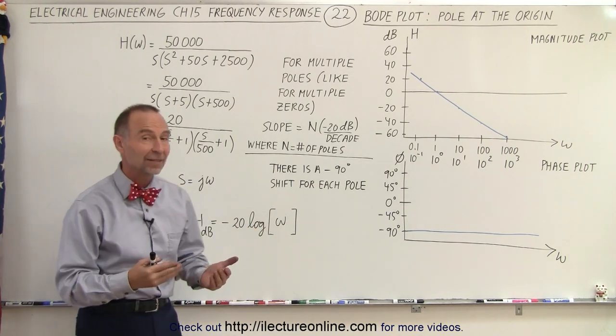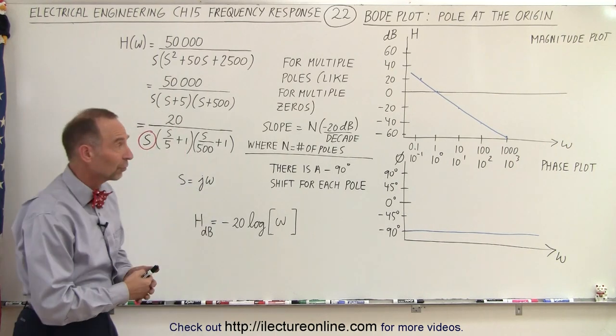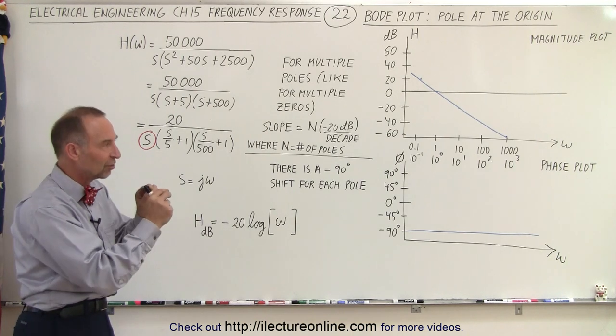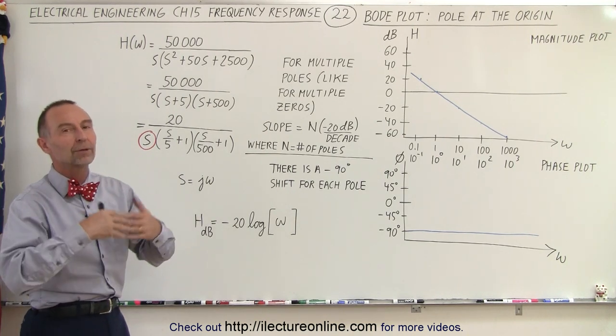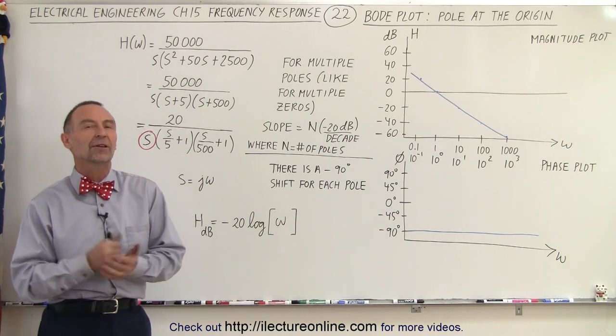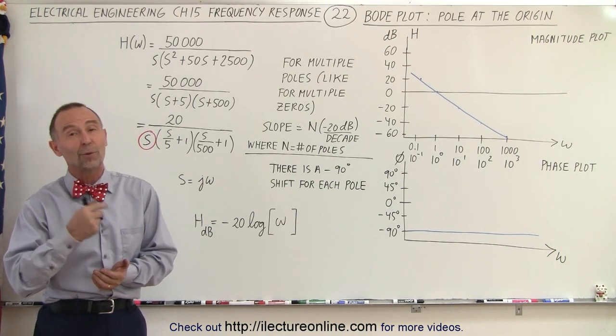So you can see now that poles and zeros are very easy to plot, and later we'll show you how to add all those various sections of the plot together to form a complete plot for the transfer function. But at least now we have a good idea what to do with poles and zeros.